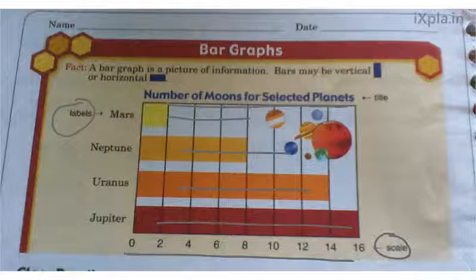The next question, 1b, asks: how many labels are used? You can see our labels right there — Mars, Neptune, Uranus, and Jupiter. There are four labels, so just write the number four for your answer.